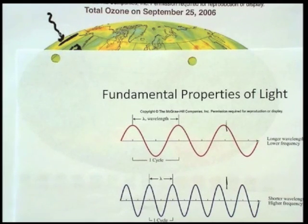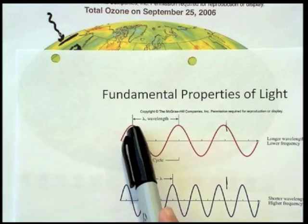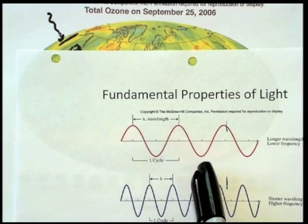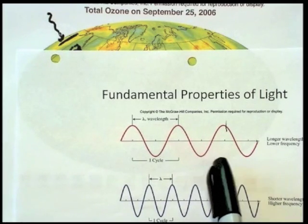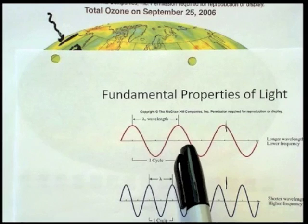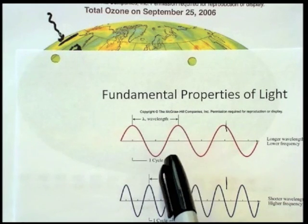What we understand then, some ways of describing different waves, is to describe the wave by its wavelength. And the wavelength is the distance from peak to peak or trough to trough. It doesn't matter, it's the same. So you can either measure from peak to peak or trough to trough.